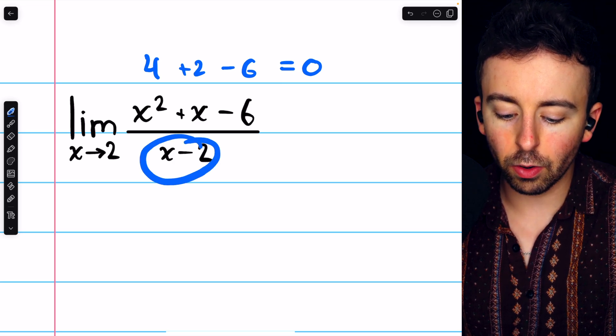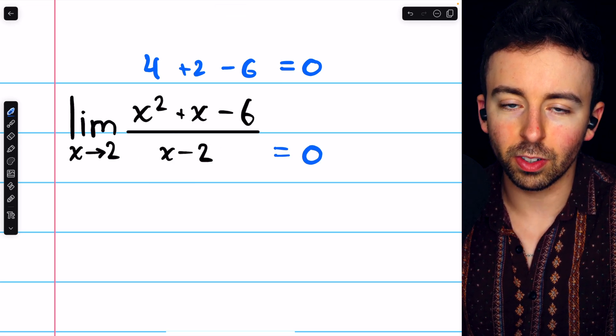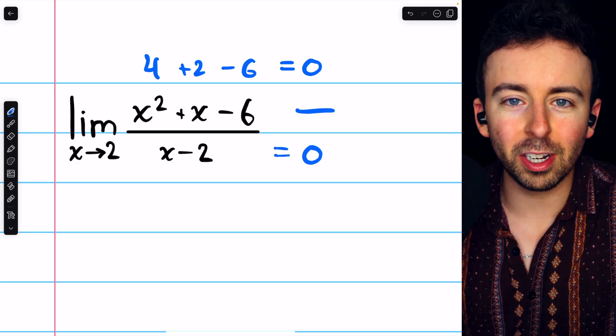And if we plug it into the denominator, we get 2 minus 2, which is also 0. So 0 over 0.